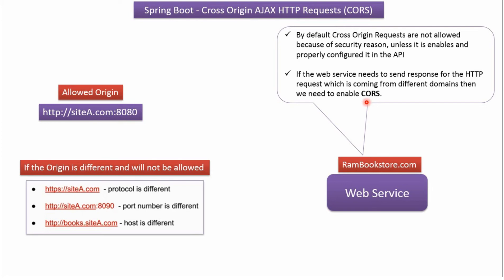Suppose cross-origin resource sharing is enabled for a specific origin — then only that origin can send requests to this web service and get a response back. If you look at these three origins, they look similar to the allowed origin but are not the same. In the first origin, the protocol is different: here HTTP, here HTTPS. In the second origin, the port number is different: here 8090, here 8080. In the third one, the hostname is different. If the origin is different, then it will not be allowed.